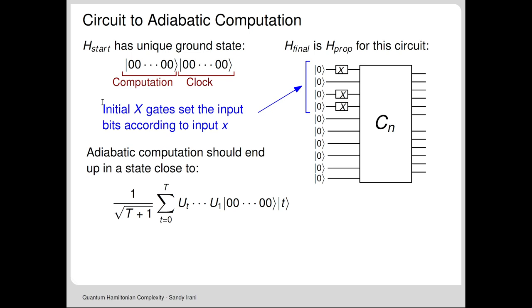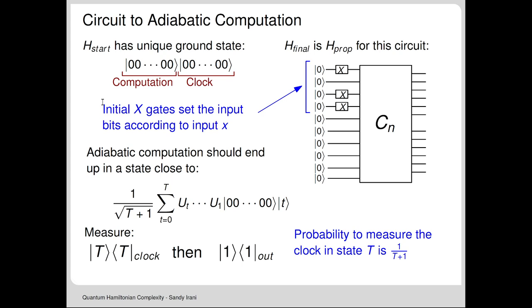To determine the output of the circuit, I'm not interested in the computation state at any arbitrary point in time—I want the state at time T. First, I measure the clock. What I have is a superposition over all points in time, but I want the final one. If I get T out, my state collapses to the output state. If I don't get T, I throw up my hands and start again. The probability of measuring T is 1 over (T+1), so this requires polynomial repetitions.